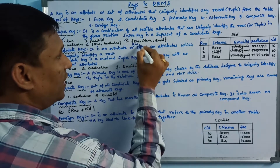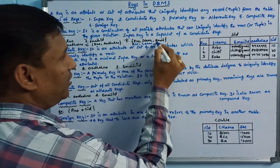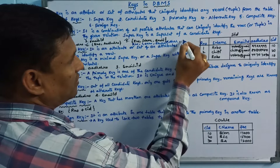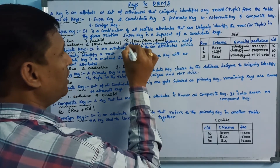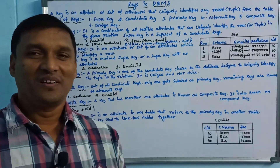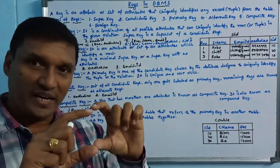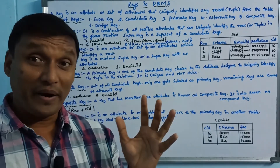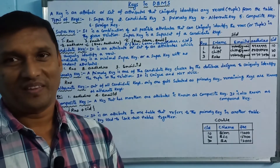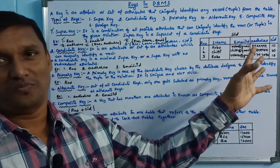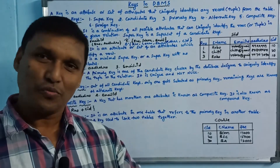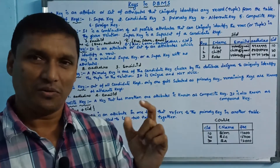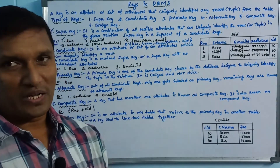We can combine rule number, name, and email ID as a key. We can also combine rule number and name, or add more attributes. Any size of combination that creates a unique identifier is a super key. A single attribute can create a super key, two attributes can create a super key, and the maximum number of attributes combined can also create a super key.